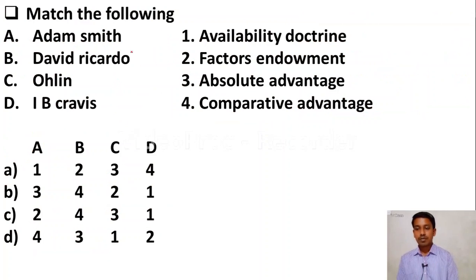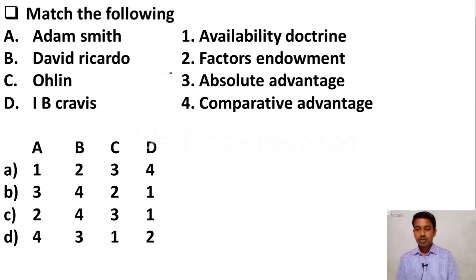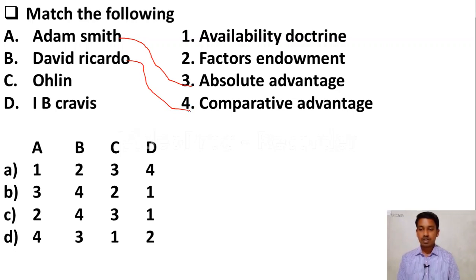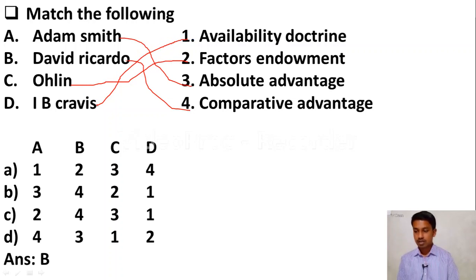Match the following: Adam Smith, David Ricardo, Ohlin, I.B. Kravitz — with: Availability Doctrine, Factors Endowment, Absolute Advantage, Comparative Advantage. The Absolute Advantage Theory of International Trade was given by Adam Smith. David Ricardo gave the Comparative Cost Advantage Theory of International Trade. The Heckscher-Ohlin theory is known as Factor Endowment. I.B. Kravitz gave the Availability Doctrine. The right answer is Option B.